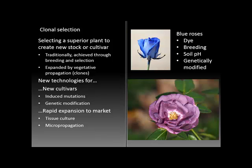Traditionally, selection was achieved through breeding and picking out the best examples of plants and breeding those. But now, with the extensive use of vegetative propagation of clones, plant selection has gone to a new level. In addition to creating new stocks or cultivars, the other side of selection is removing and eliminating undesired examples from the breeding population.